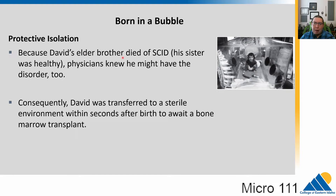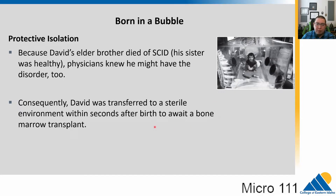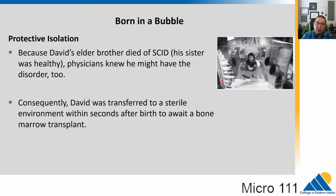David's older brother had died of SCID. His sister was healthy, so physicians knew there was a chance he might have the disorder too, since it is genetically inherited. When he was born, he was transferred instantly into a sterile environment. The hope was that they could give him a bone marrow transplant, but they needed to wait many years for him to grow and develop and get strong enough. B cells and some other cells are made in the bone marrow, so transplanting healthy bone marrow into a SCID patient could allow them to start making adaptive immune cells.